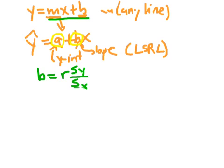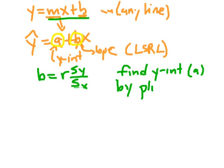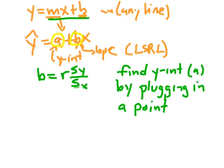Going back to y equals mx plus b days: you find the y-intercept, which in this case is the letter a, by plugging in a point. The point you know is on the LSRL is (x-bar, y-bar). X-bar is the mean of all the x values, probably in L1; y-bar is the mean of all the y values, in L2. So this lets you figure out both the y-intercept and the slope.